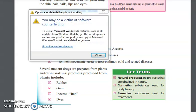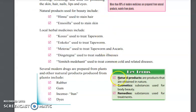Natural products are products that are obtained in nature. Cosmetics are substances used to beautify our body or for body beauty, and remedies are substances used for treatments.